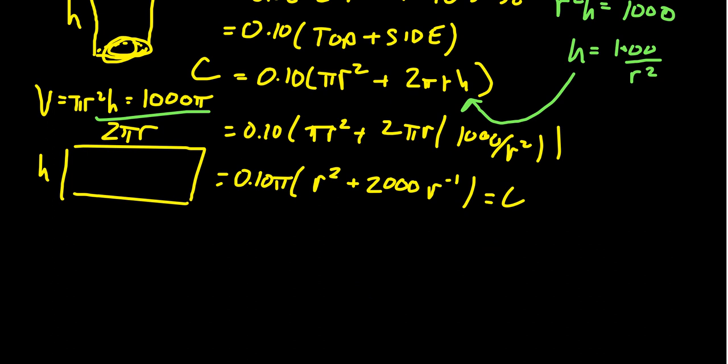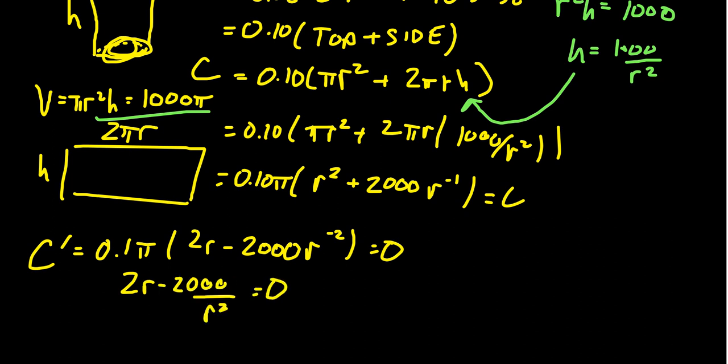Taking the derivative: C' = 0.1π(2r - 2000r⁻²) = 0. Dividing both sides by 0.1π gives 2r - 2000/r² = 0. Moving terms to the other side: 2r = 2000/r².